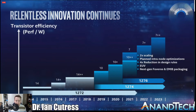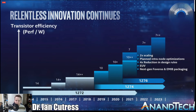Now, what if Intel did that? We would have 14 as 14. 14 plus would be 13. 14 plus plus would be 12. Then the next major process node would be 10, followed by 9, then 8. Then the next major node would be 7, then 6, and then perhaps several versions of 5. The fact that Intel is stuck on this plus naming is perhaps to the detriment of how they're presenting their process node technology.